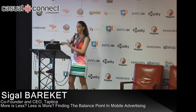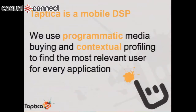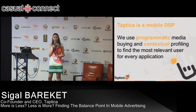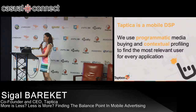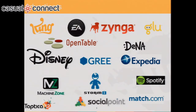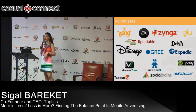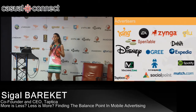Just a few buzzwords about Taptica. Taptica uses technology like programmatic media buying and contextual user profiling to make sure that we're sending the most relevant user to each and every application that we're working with. We were very lucky to work with the most interesting companies in the industry, including King, EA, Zynga, Disney, and Expedia. For all of these companies, we are helping them acquire relevant users to their application.